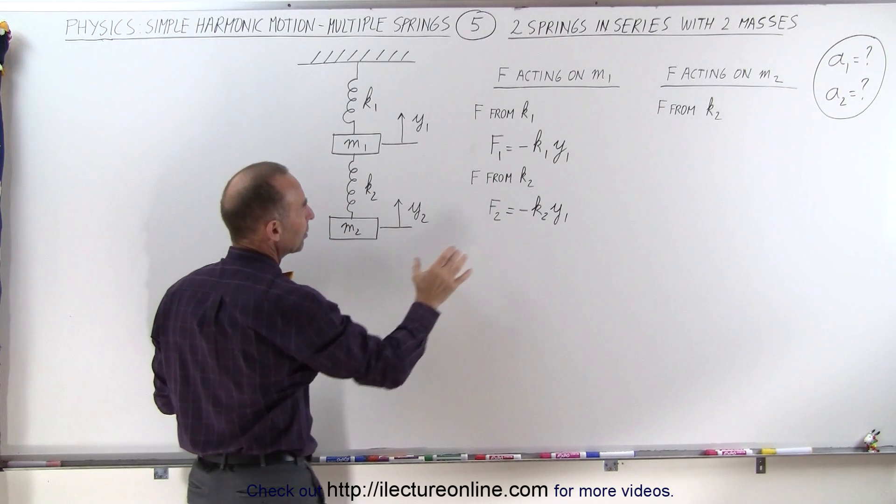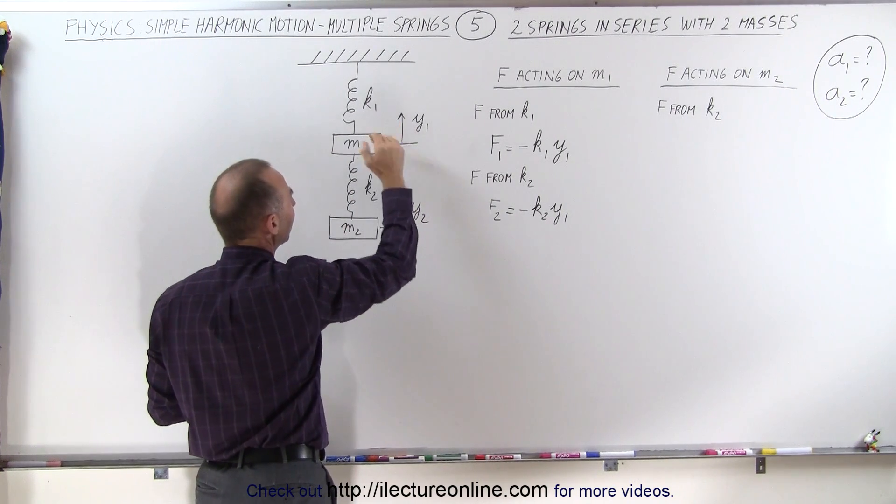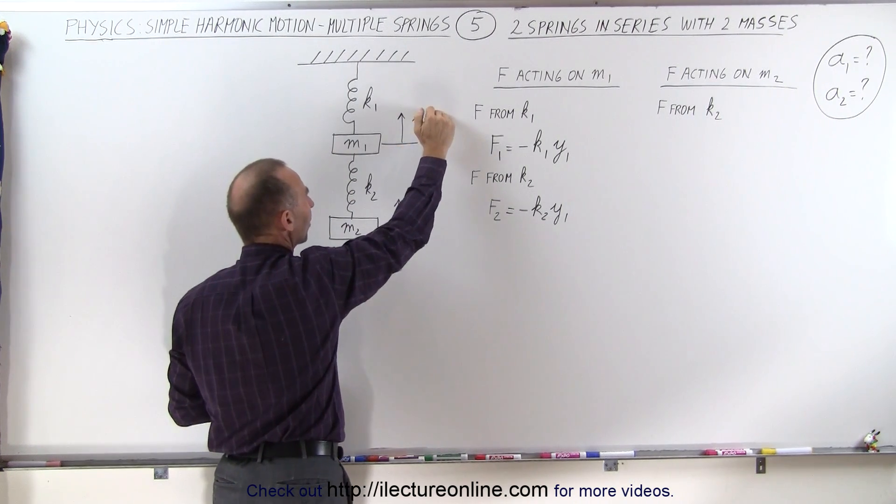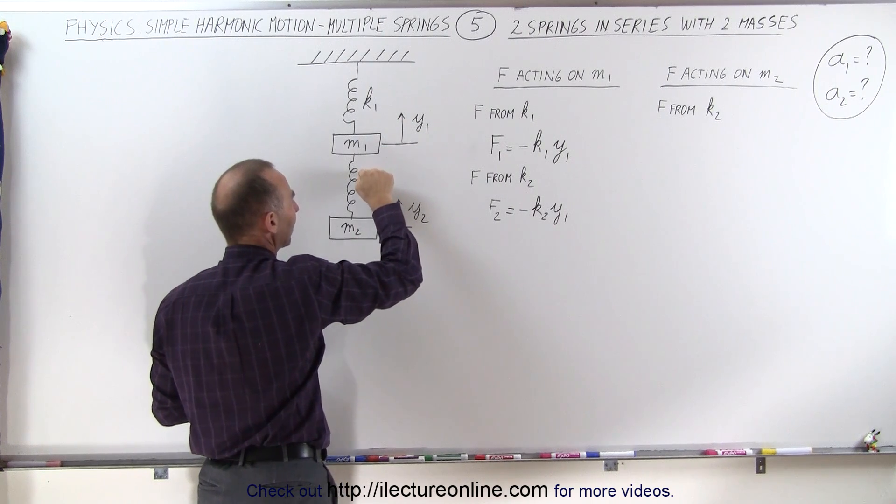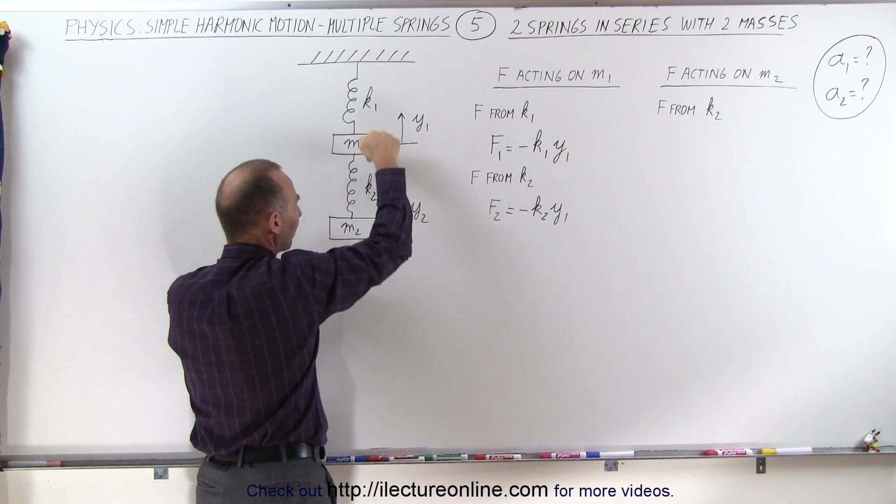So it will be minus k2 times y1. So that will be the force felt by m1 if y1 is positive, and spring k2 is then being elongated, pulling back this way.